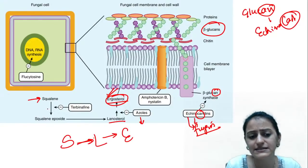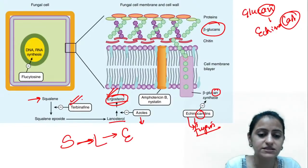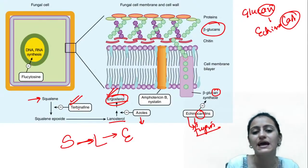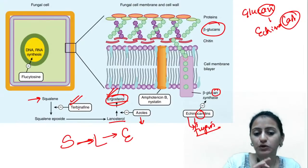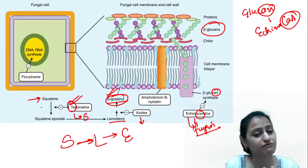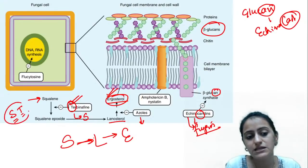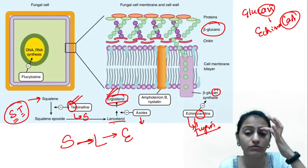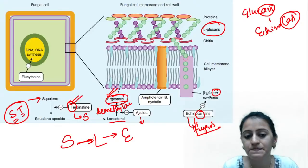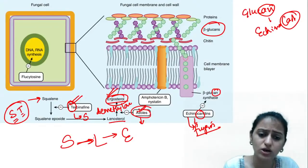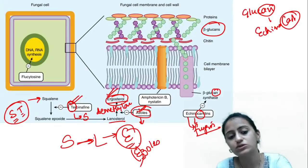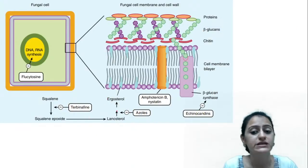The enzyme squalene epoxidase is inhibited by terbinafine. Alphabetically, S comes before T — so terbinafine inhibits squalene epoxidase, blocking lanosterol formation. Then lanosterol to ergosterol: the 14-alpha-demethylase enzyme is inhibited by azoles. You can write azoles as 'ezoles' — they inhibit ergosterol synthesis by inhibiting the 14-alpha-D-methylase enzyme. This is a very important match-the-following type exam question.